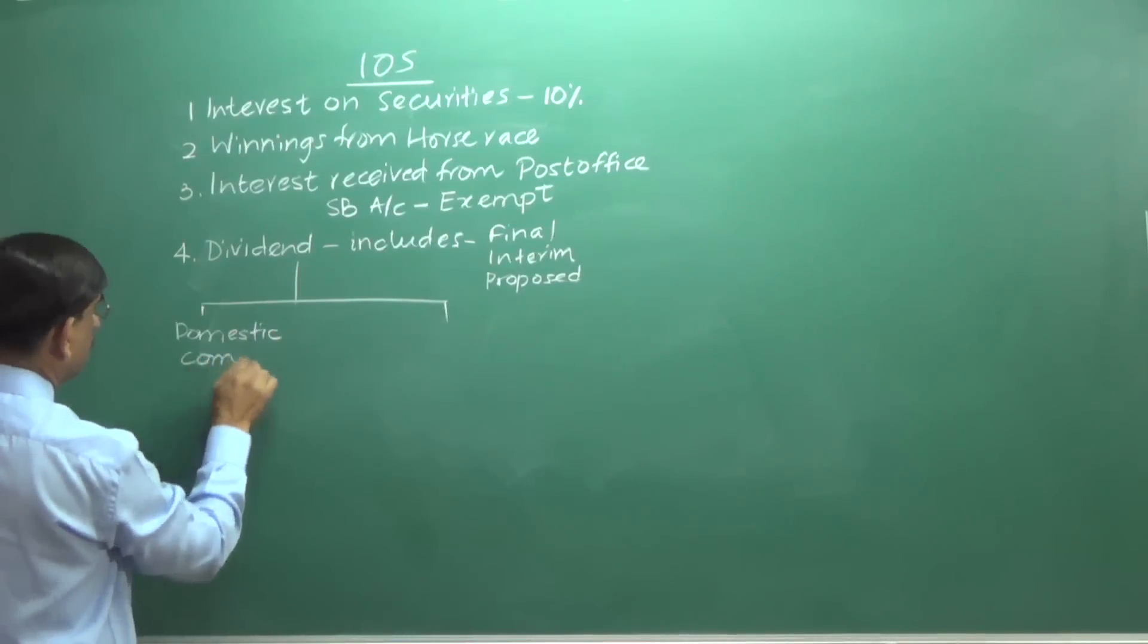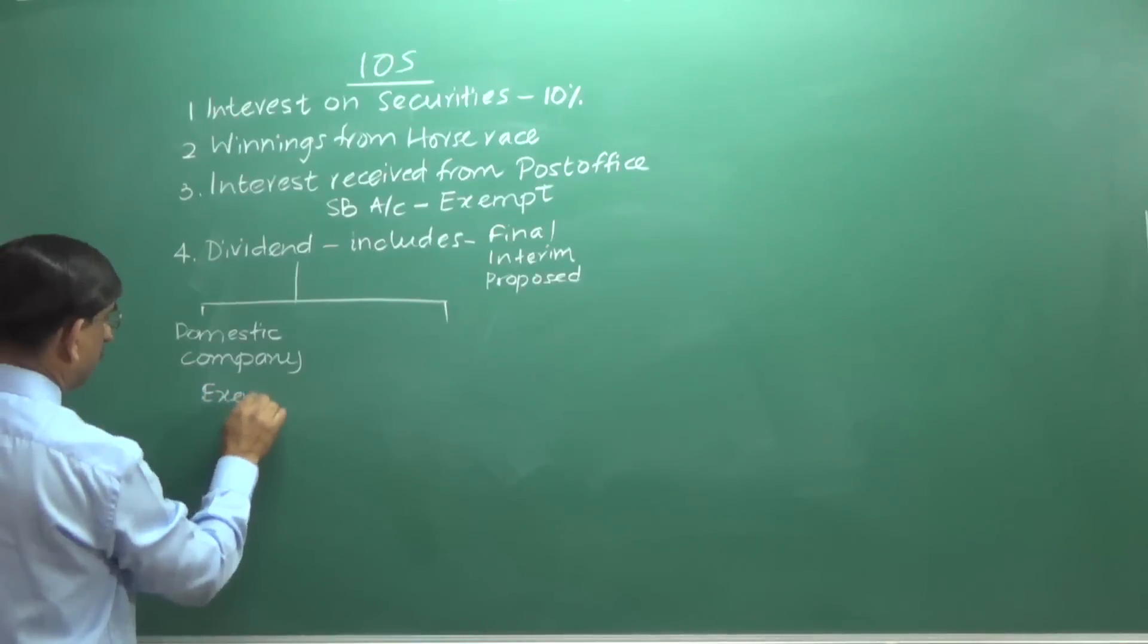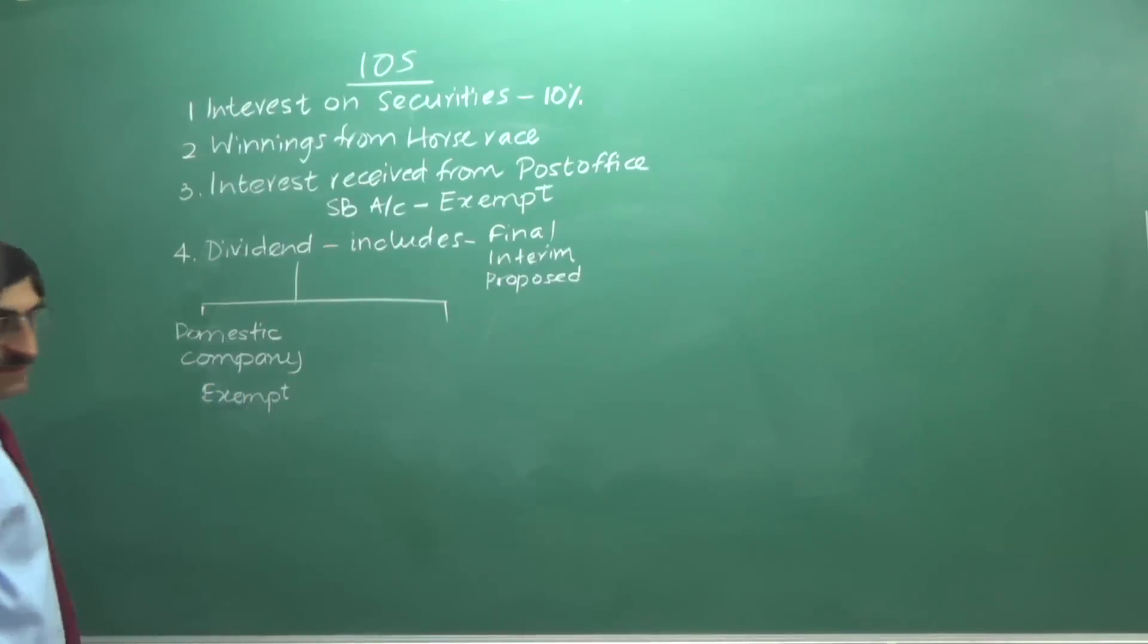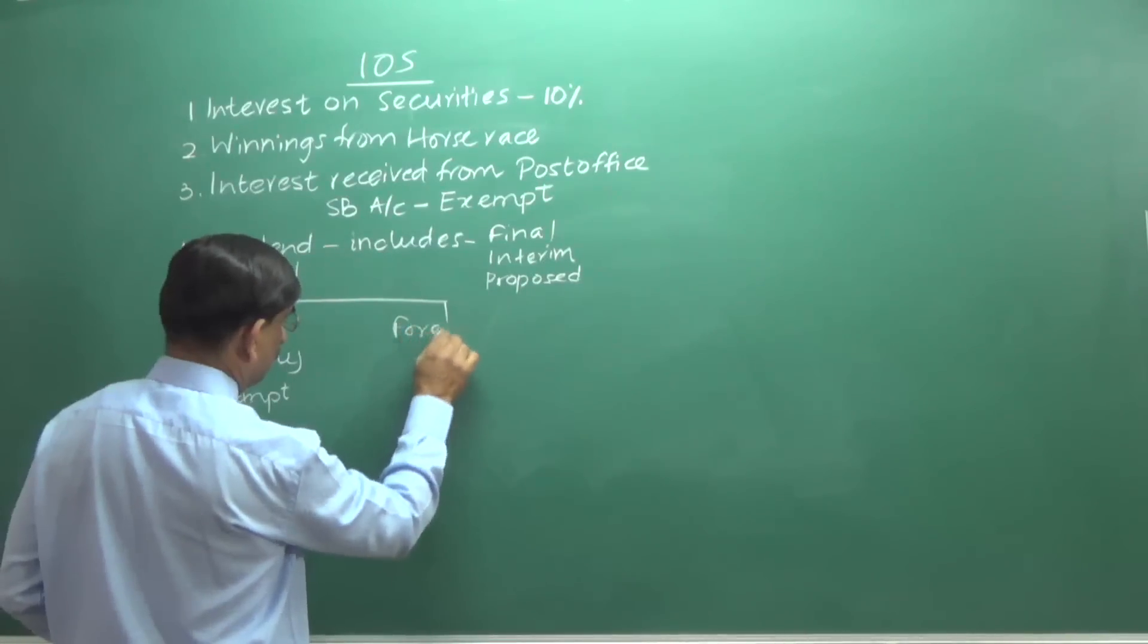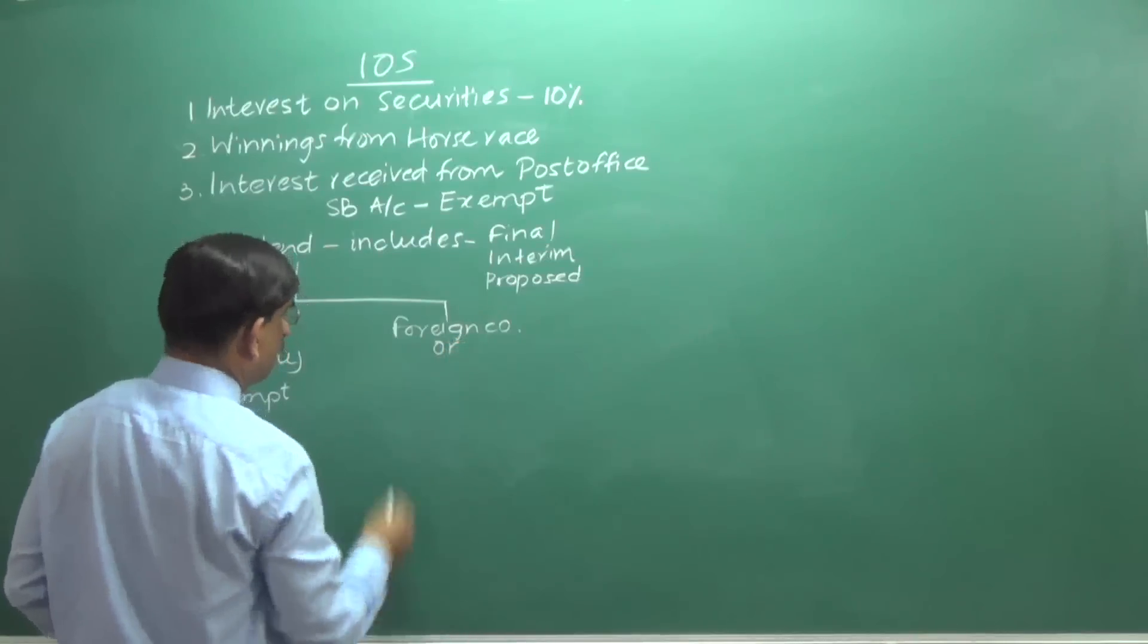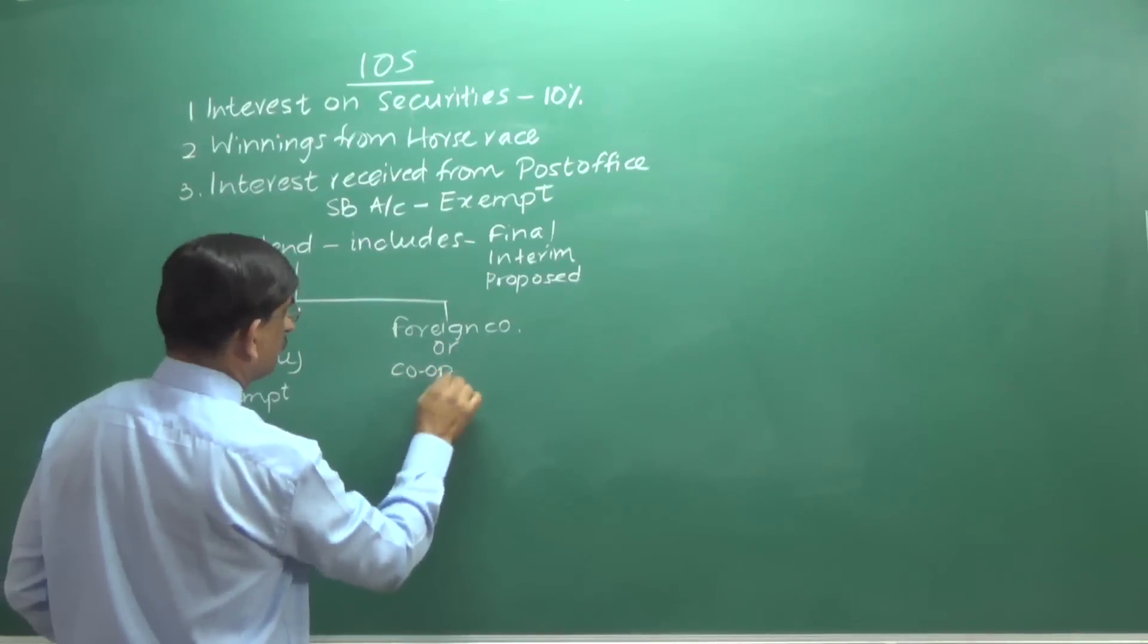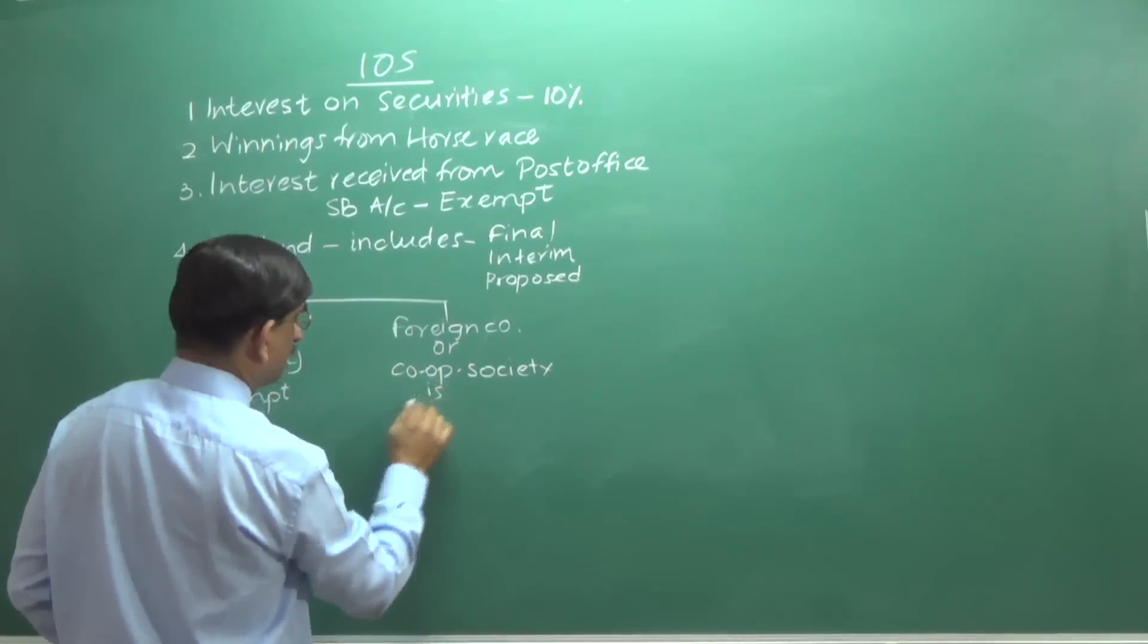Dividend would have been received from a domestic company. Any dividend received from a domestic company is exempt. Any dividend received from a foreign company or a cooperative society is taxable.